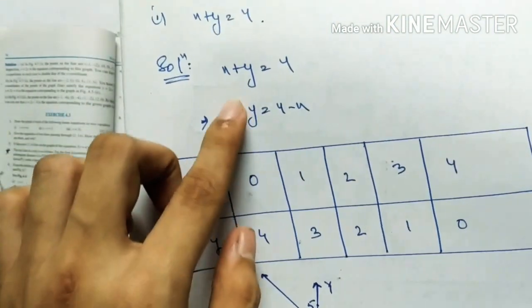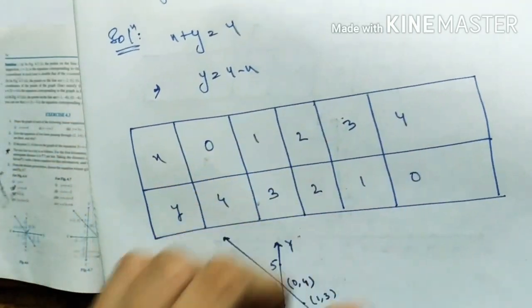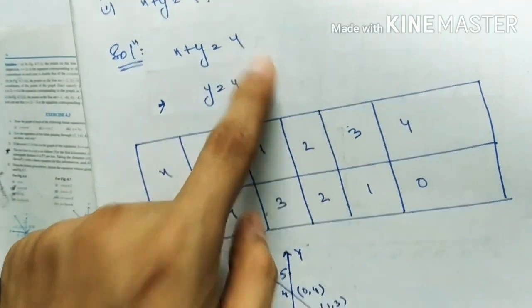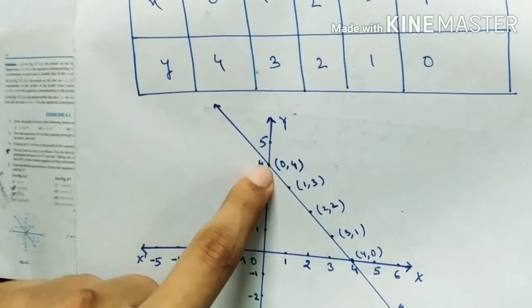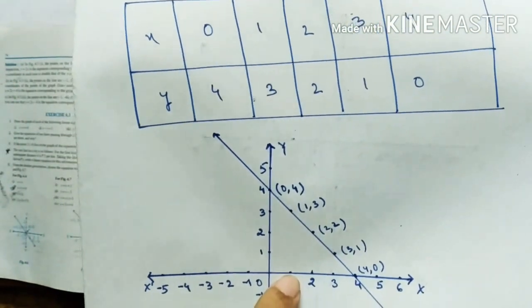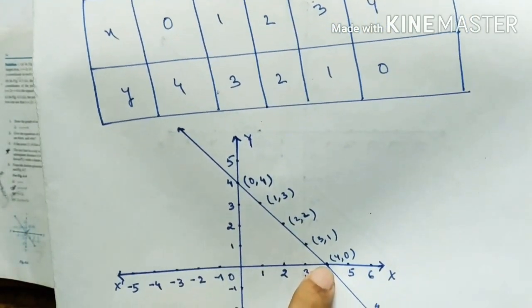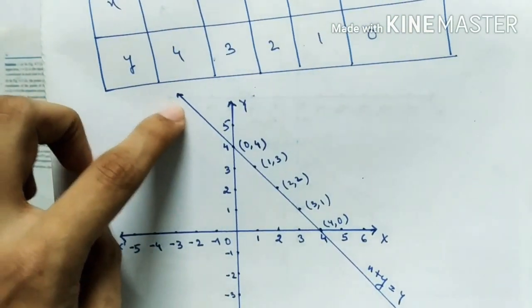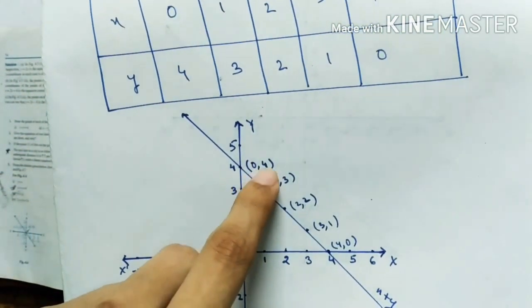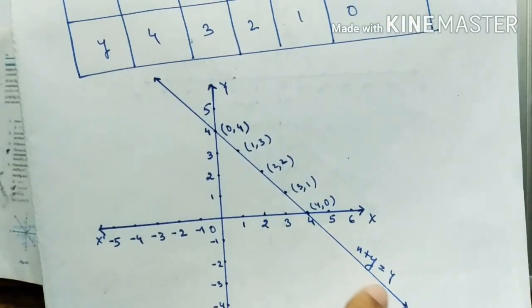These are the solutions of the equation: (0,4), (1,3), (2,2), (3,1), (4,0). The first solution is x=0, y=4, which gives point (0,4). Next is (1,3), then (2,2), then (3,1), and (4,0). Join these points with the help of a scale to draw a straight line passing through them. Write the coordinates of the points and the equation x plus y equals 4.